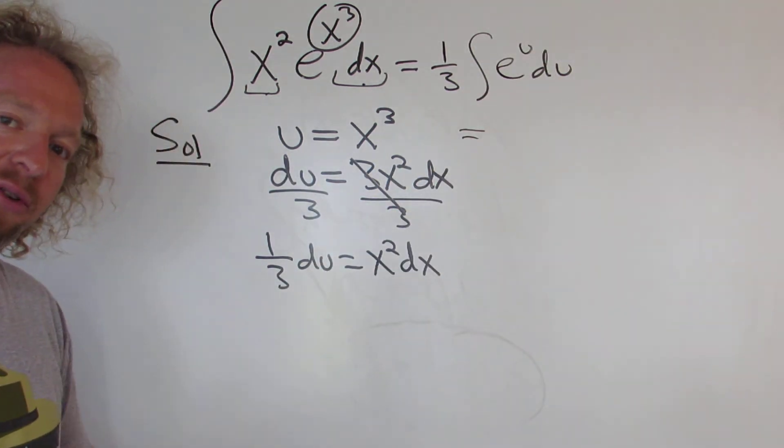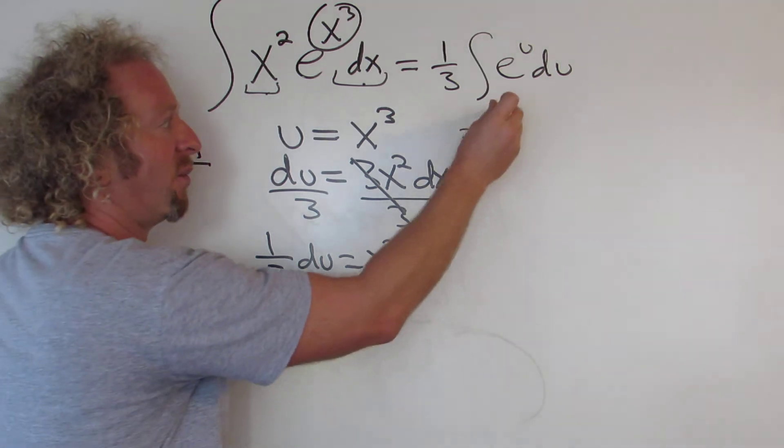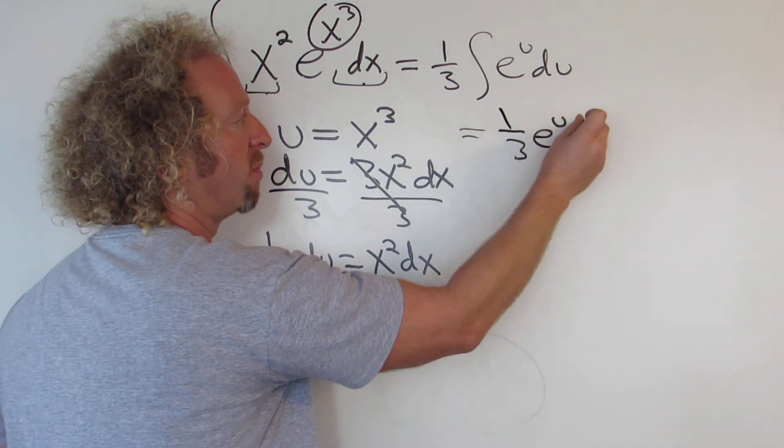And now we can integrate. The integral of e to the u is e to the u. So we have 1 third e to the u plus the constant.